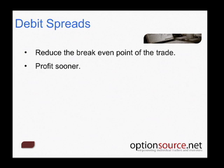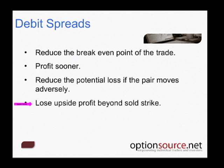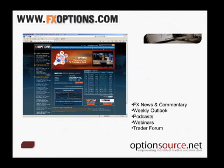To summarize before we take a few more questions: the benefit of a debit spread is that it reduces the break-even point of our trade, which allows us to profit sooner. It also reduces the potential loss if the pair moves adversely. But we do lose upside potential beyond the sold strike — and that has to be a trade-off we're prepared to take.